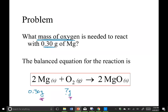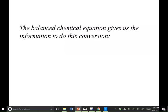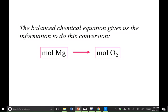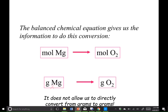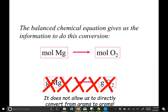So let's think through what that looks like. We can use those coefficients — the coefficient from the magnesium is 2, the coefficient in front of the oxygen is 1 — as a stoichiometric ratio to go from moles of magnesium to moles of oxygen, like we did before. But we cannot use those stoichiometric coefficients to make a ratio to go directly from grams of magnesium to grams of oxygen.